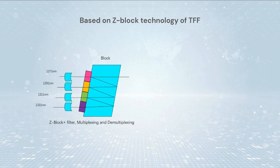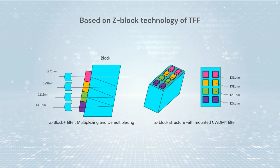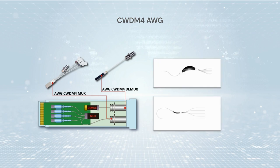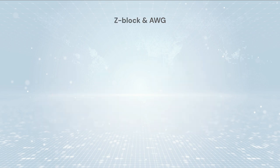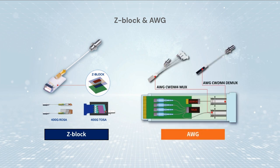The first CWDM4 module is based on Z-block technology of TFF. TFF thin film filter technology is mainly implemented using Z-block method with free space optics design, combined with collimators and using 4 CWDM wavelength filters through micro optics to perform multiplexing and demultiplexing. To simplify the packaging process and reduce size and cost, a CWDM4 AWG chip based on integrated optical technology has been developed.